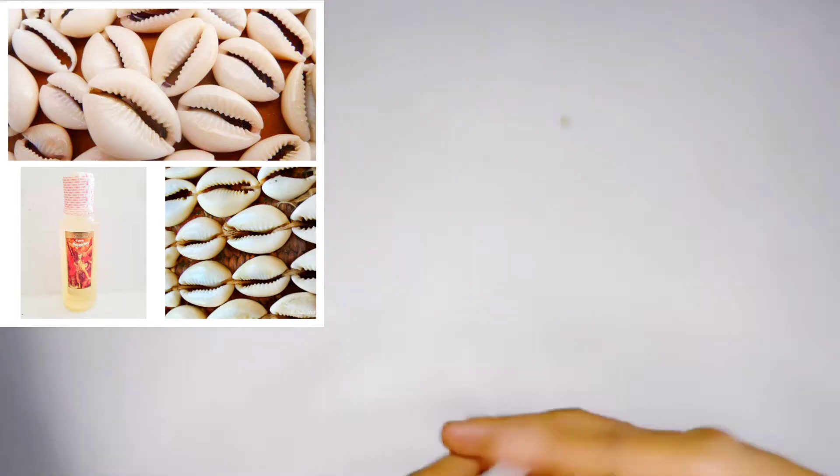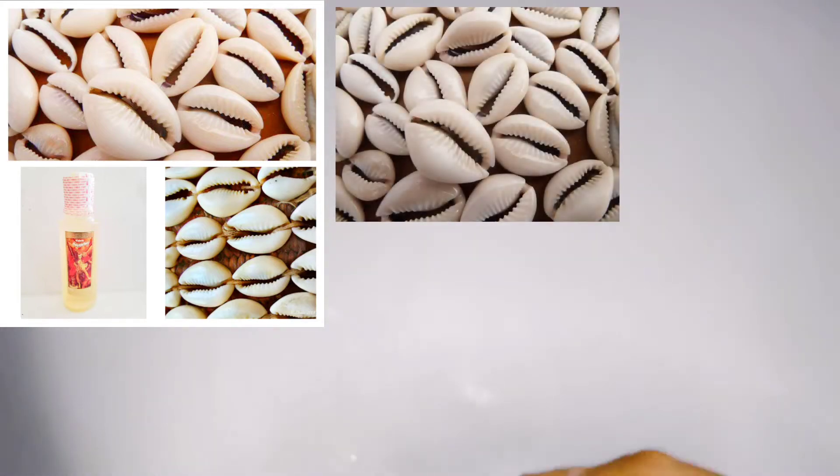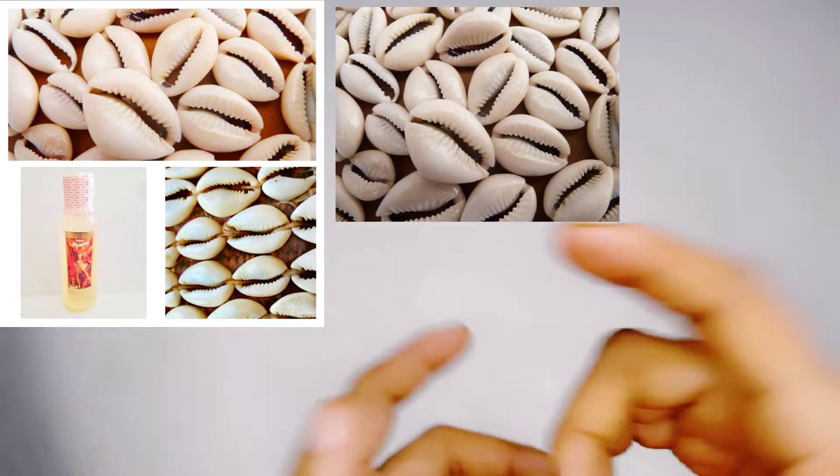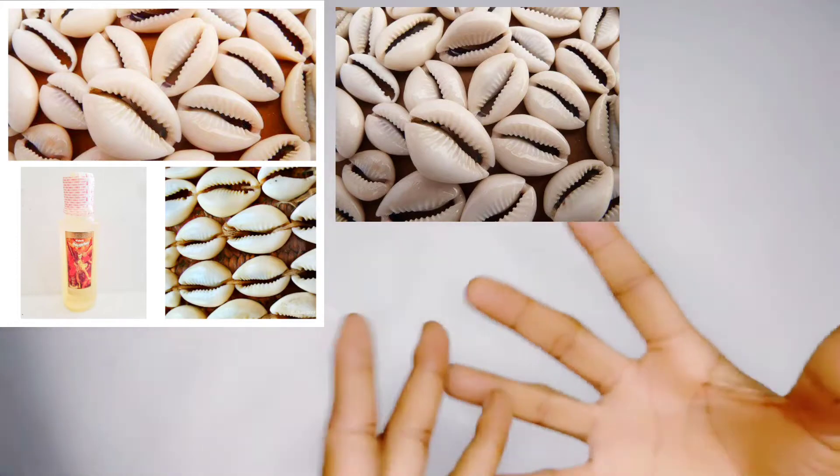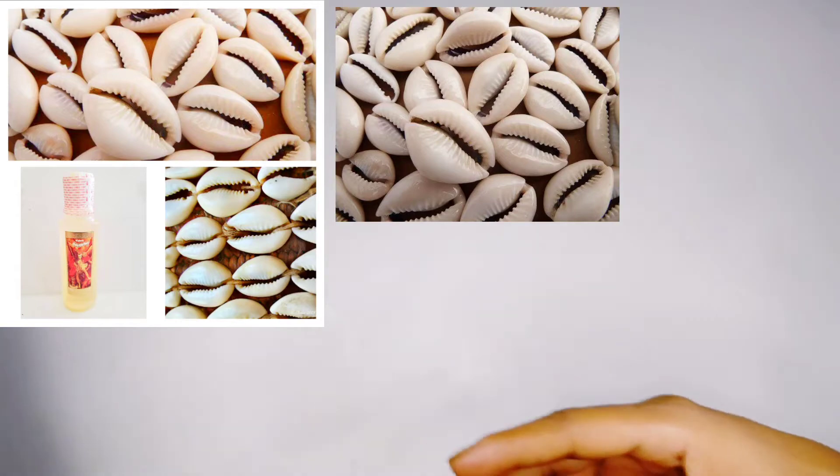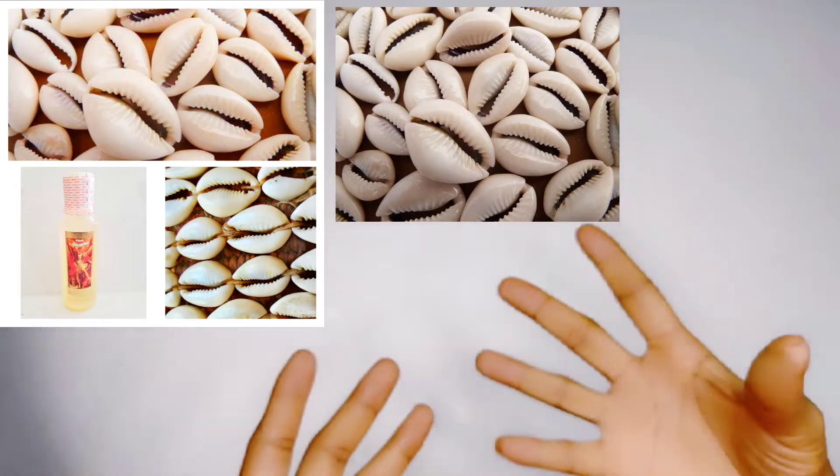Go to any market of your choice and get cowries. Buy cowries of your choice, styles of your choice. You can as well just buy the one that they have not converted into necklace or leg chain or headband. Just buy the ordinary cowries and fortify it for yourself. Whichever type, just get cowrie.